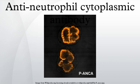PANCA has three subtypes: classical PANCA, PANCA without nuclear extension, and granulocyte-specific anti-nuclear antibody. Classical PANCA shows perinuclear staining with nuclear extension. PANCA without nuclear extension has perinuclear staining without nuclear extension, and GSANA shows nuclear staining on granulocytes only.